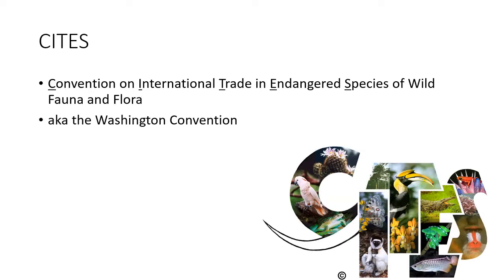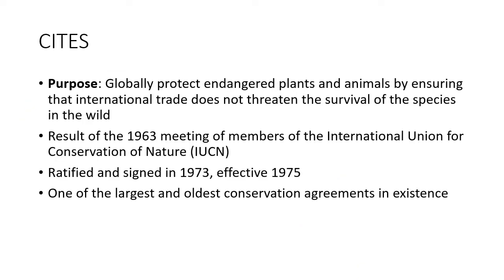The IUCN Red List isn't actually legislation — it's an international organization. But CITES is a piece of legislation. CITES stands for the Convention on International Trade in Endangered Species of Wild Fauna and Flora. Also called the Washington Convention, though you'll probably never see that term. The purpose of CITES is to protect endangered plants and animals through trade, ensuring that international trade does not threaten the survival of species in the wild.